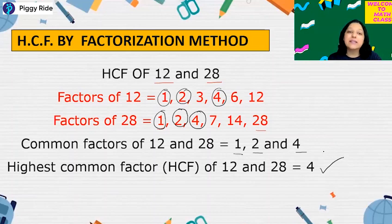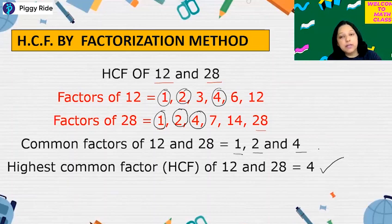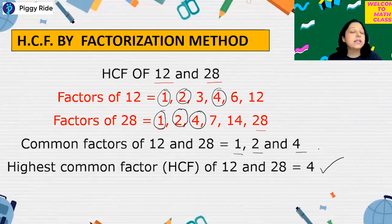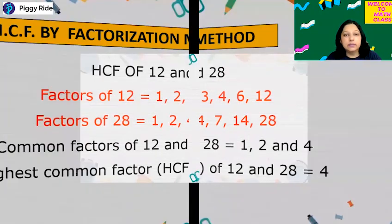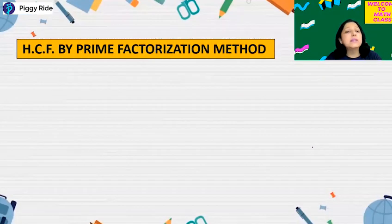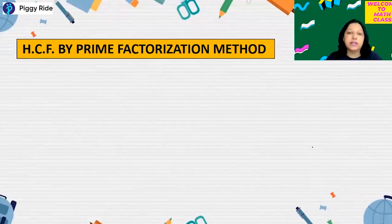So HCF of 12 and 28 is 4. This is called HCF by factor method or by factorization method — just write the factors and check the highest common factor. Now let's see the next method.